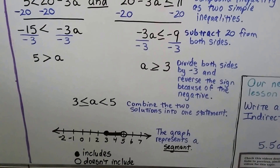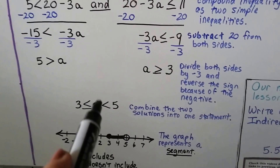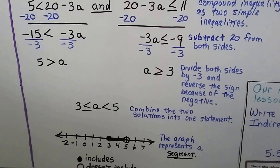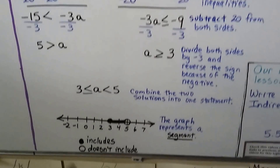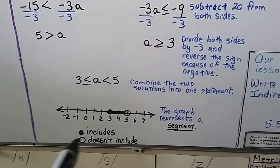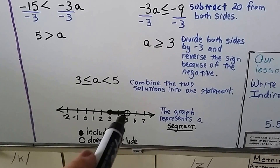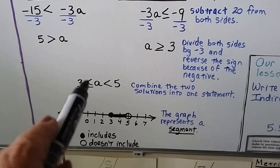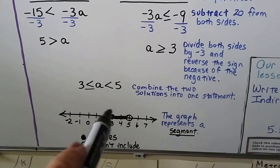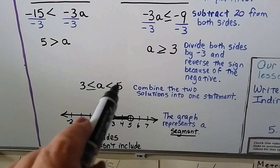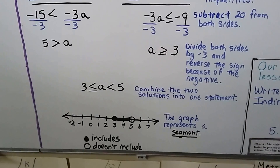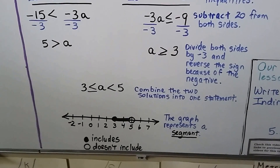We combine the two solutions into one statement: 3 ≤ a < 5. A filled-in dot means the value is included, and an open dot means it's not. Since a is greater than or equal to 3, we use a filled-in dot at 3, and since a is less than 5, we use an open dot at 5. This graph represents a segment.